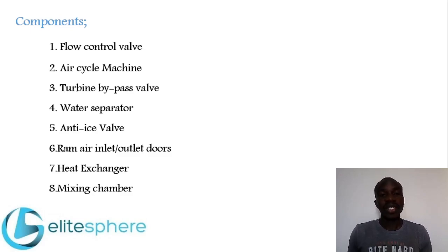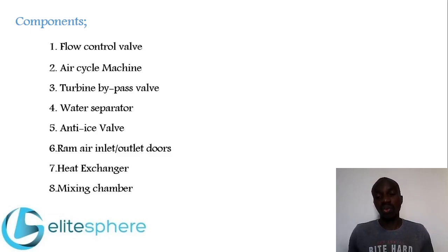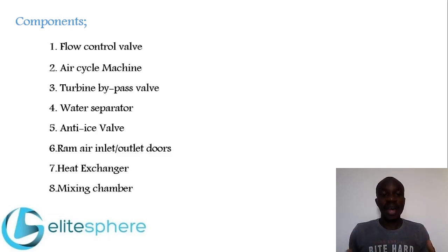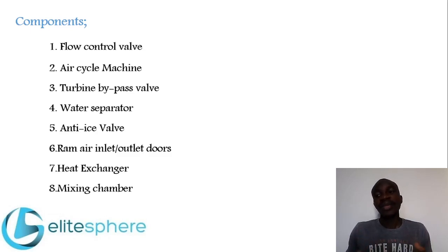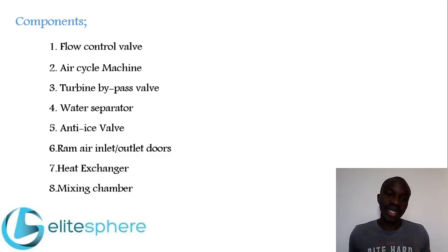The next component is the water separator. The water separator is used to remove all condensed moisture from the air before the air goes to the cabin — that is its only function. Once the water separator has collected the moisture, it sprays the water through the heat exchanger, which assists in cooling the heat exchanger.